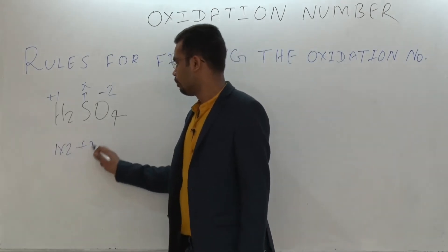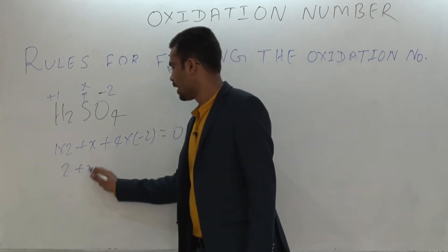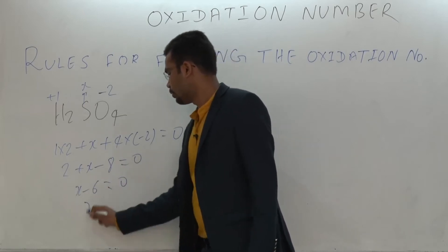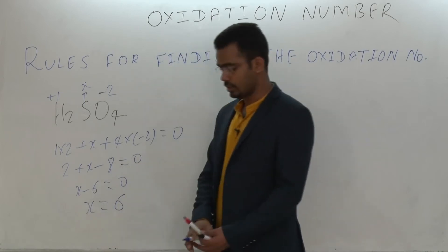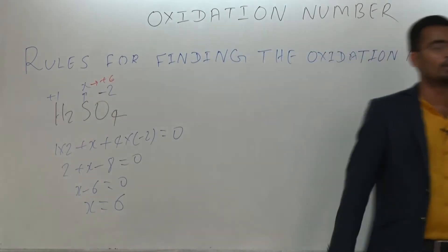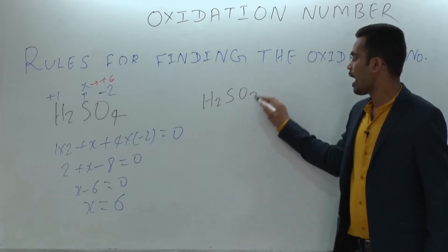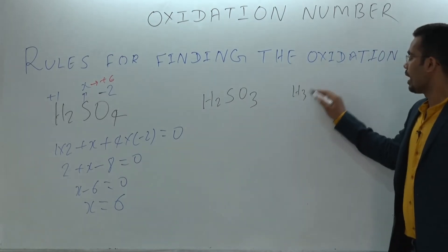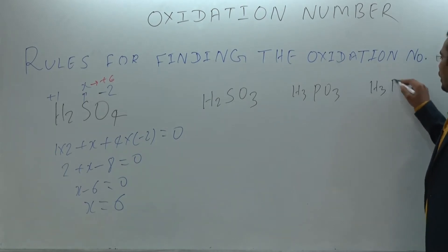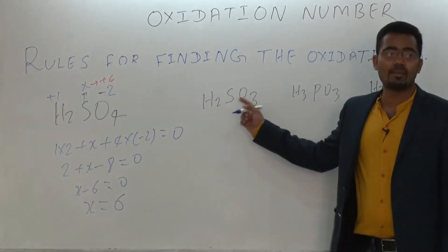So: 1×2 plus x plus 4×(−2) equals 0. That gives 2 plus x minus 8 equals 0, so x minus 6 equals 0, which means x equals 6. Therefore the oxidation state of sulphur in H₂SO₄ is plus 6.